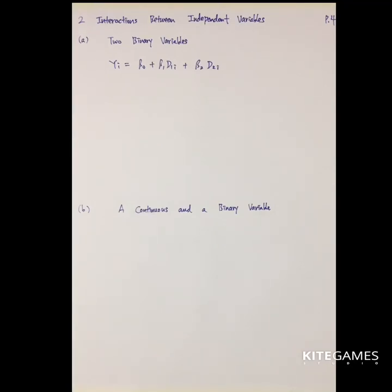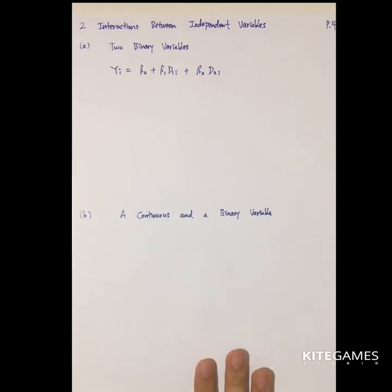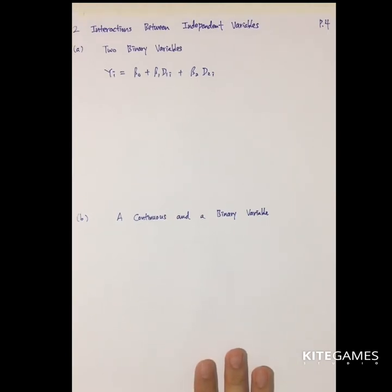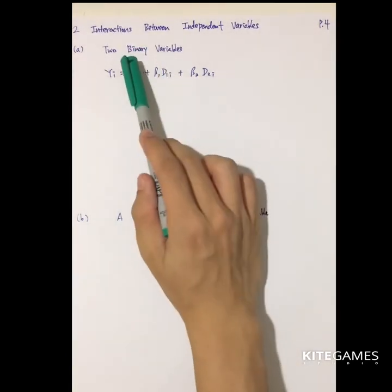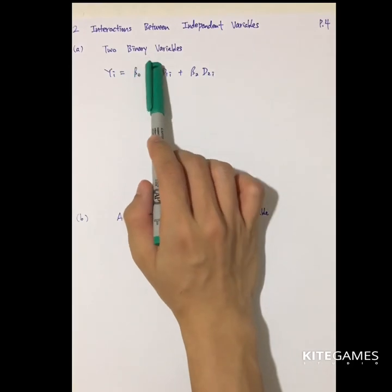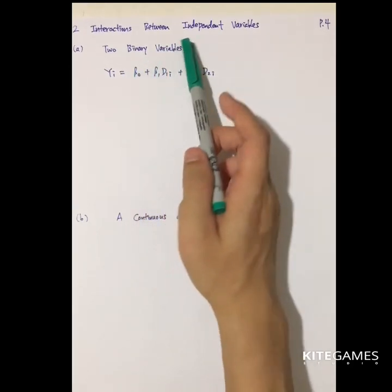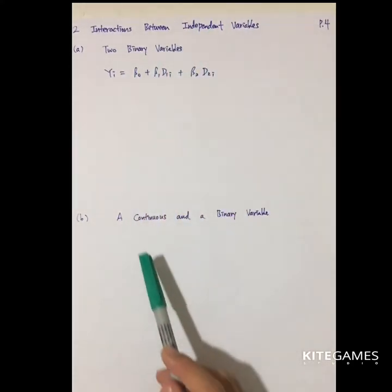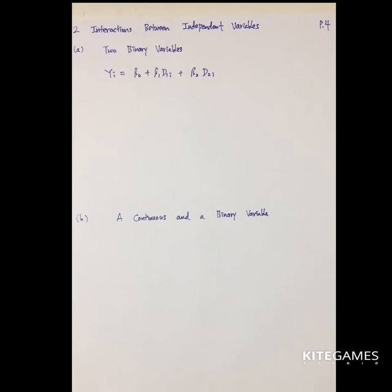Next, we will talk about the interaction between the independent variables. Basically, we have three types of interaction. One is two binary variables that interact with each other. Second is one continuous and one binary. And finally, it's the two continuous variable case, so they can cover all the different scenarios.